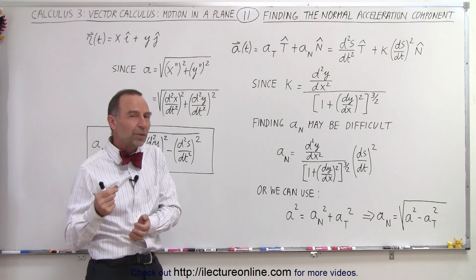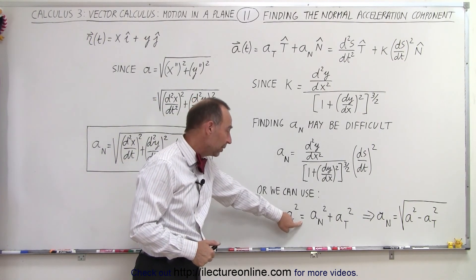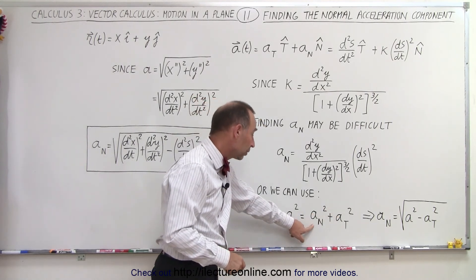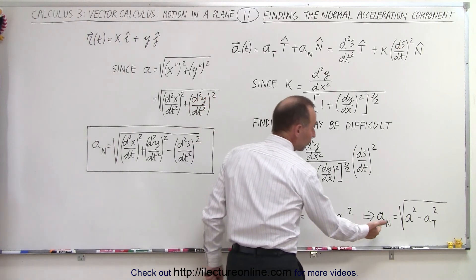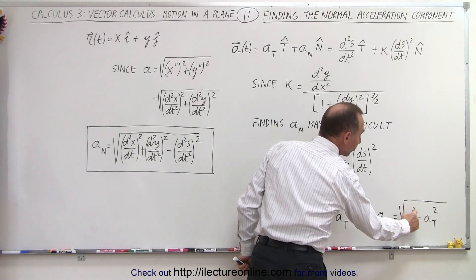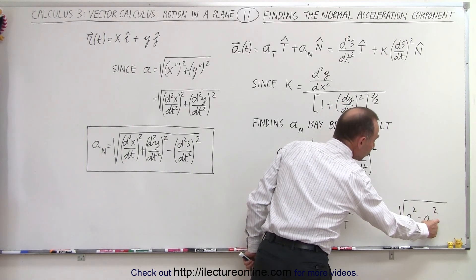Notice what the normal component looks like, at least the magnitude of the normal component of the acceleration. So instead we can use Pythagorean theorem. We realize that the magnitude of the acceleration is simply the sum of the squares of the individual components, the normal component and the tangential component. So if we solve this for the normal component, that is equal to the square root of the magnitude of the acceleration squared minus the magnitude of the tangential component squared.